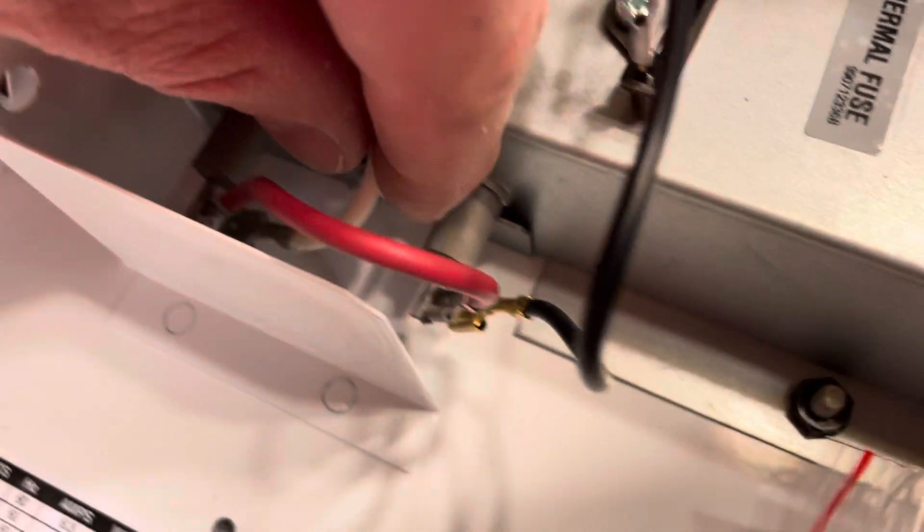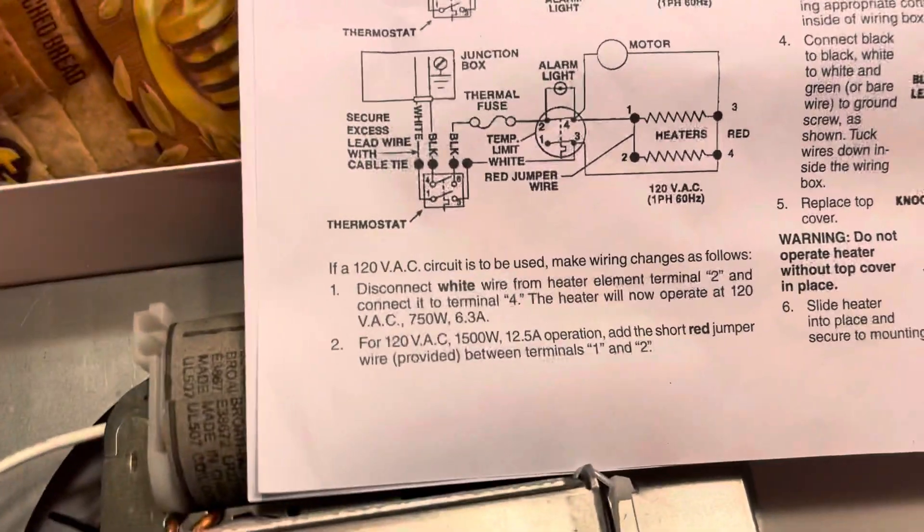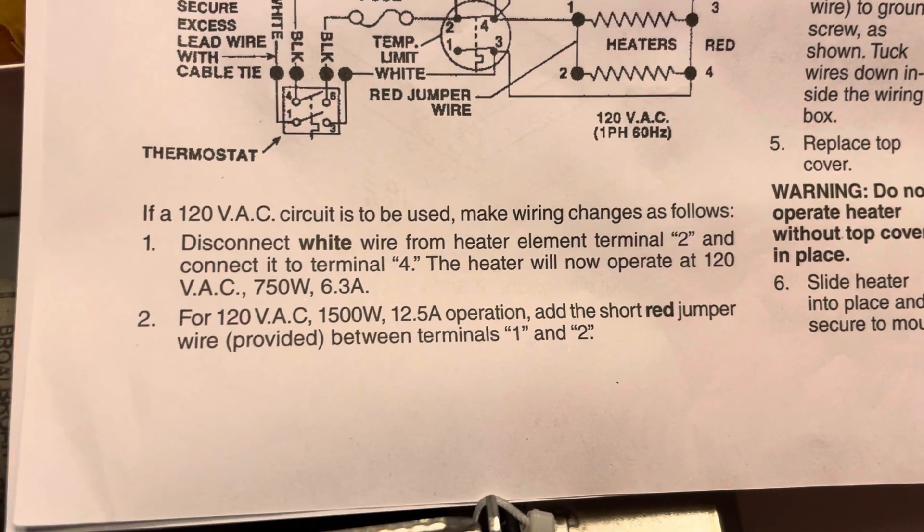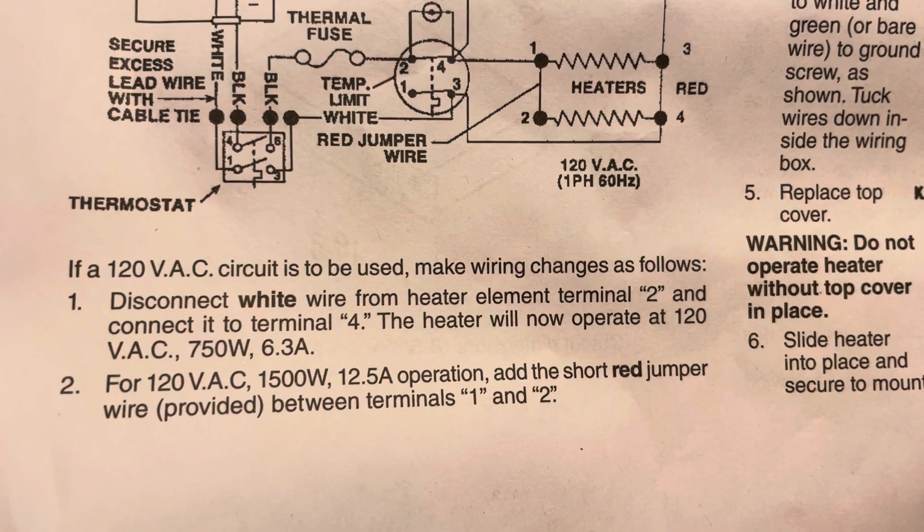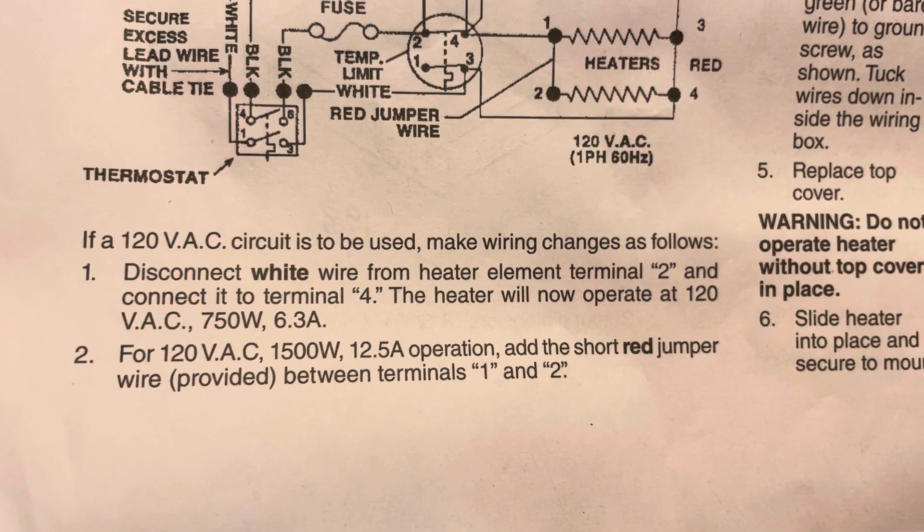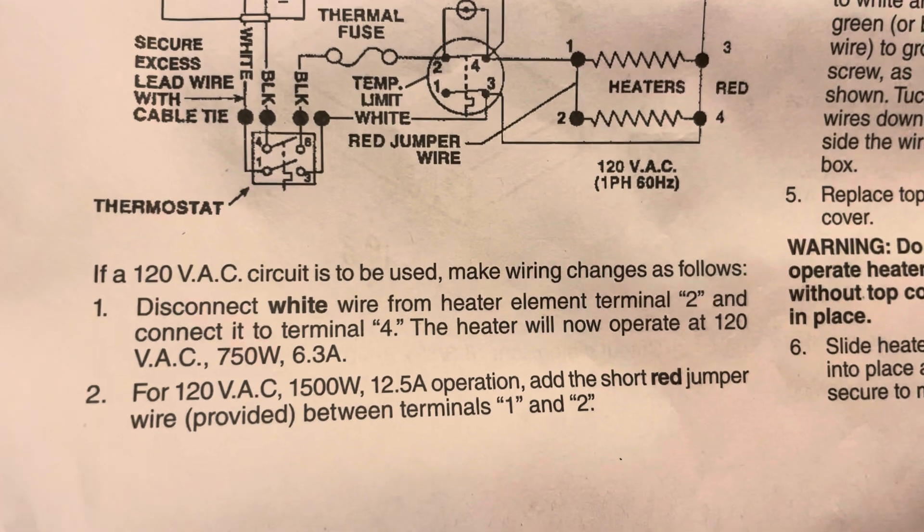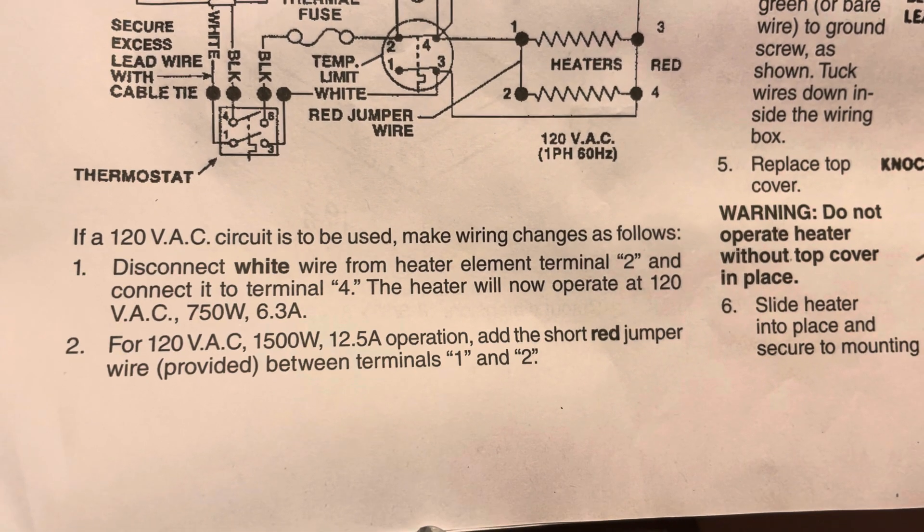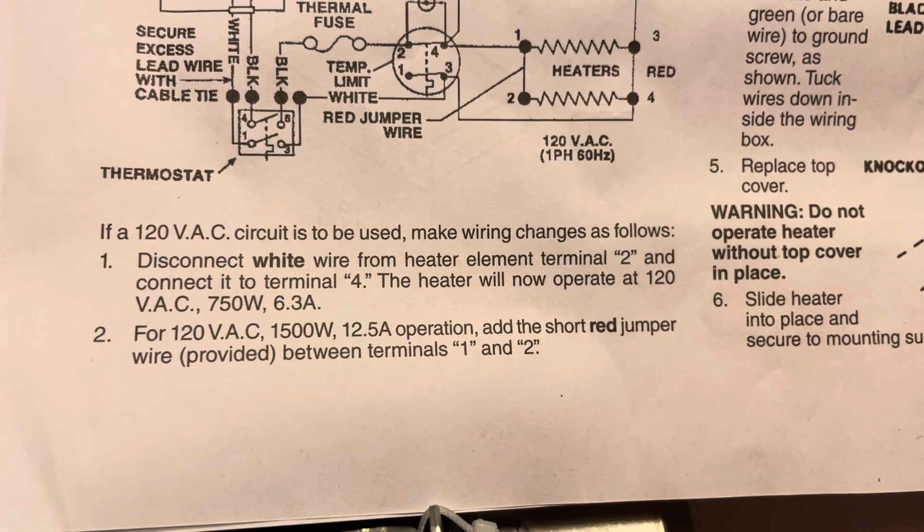String it over here to terminal number 4, and you can see there's a connection for it at the bottom there right in there. Okay, that's step number one to work on the 120 volt mode. Now in that mode it's going to be operating at 750 watts. So if you're on a 15 amp circuit breaker, it's going to be below half of the wattage because you're only running about 6.3 amps.